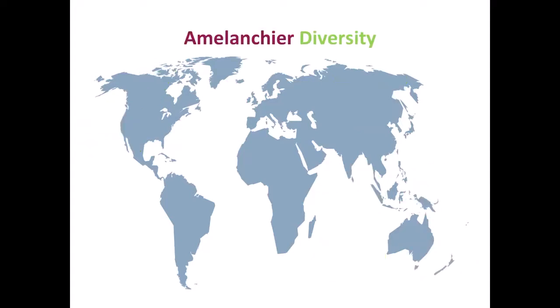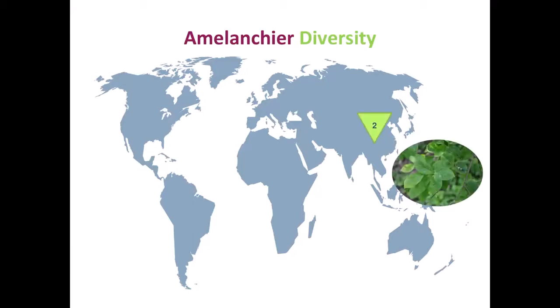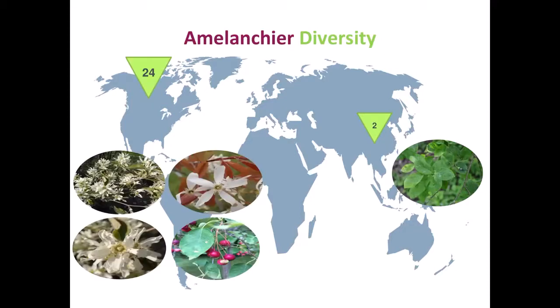Looking at Amelanchier diversity, we go in the other direction and look at China — they have only two species. China is super rich in diversity of all sorts of plants, with hundreds of species of maples and magnolias, but they only have two Amelanchier species. We contrast that with Canada, which has 24 — including some varieties and hybrids common in the wild. So Canada is actually an incredible hotspot for Amelanchier diversity, essentially the greatest in the world, and it's a really misunderstood group of plants with so much more potential.